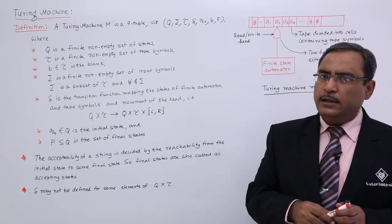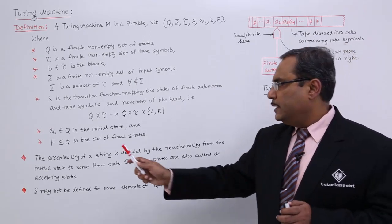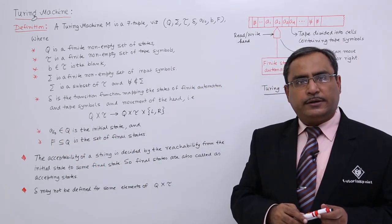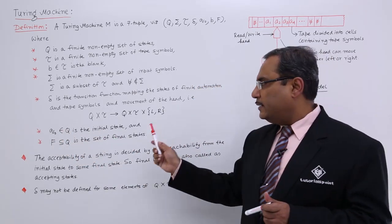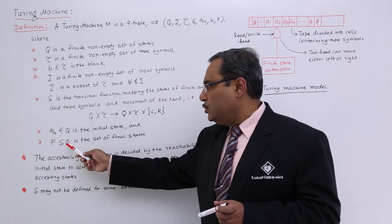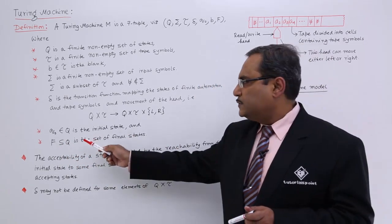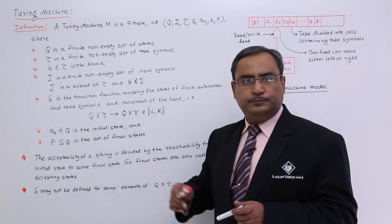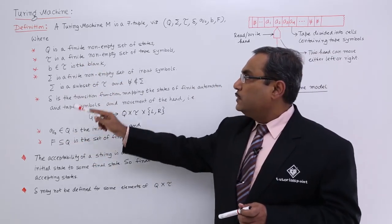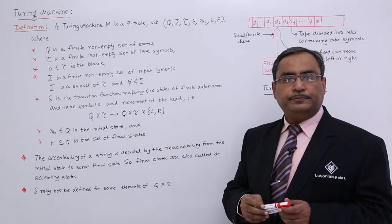Q0 belongs to capital Q and is the initial state. F is a subset of Q and is the set of final states. In this way, all seven tuples have been defined for the Turing machine.